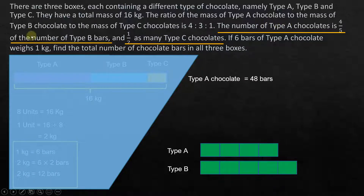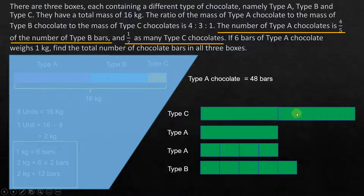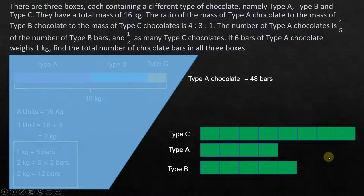So there is 1 unit for type A and 2 units for type C. Since we already have type A represented as 4 units from the previous ratio, when we say 1 unit here it has to match that size, making type C 2 such units. Also, the 4-unit type A bar is equally divided into 4 smaller units, so we can divide type B and type C similarly, and merge the two representations of type A.